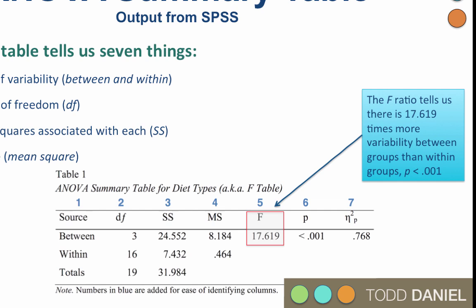As you can see, if you have degrees of freedom and the sum of squares, you could calculate the rest of the table from these values.